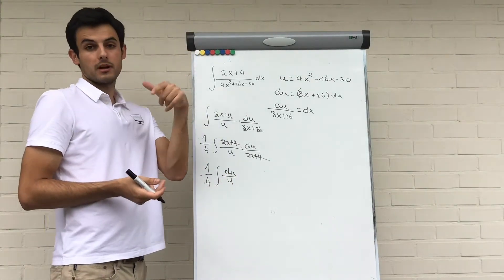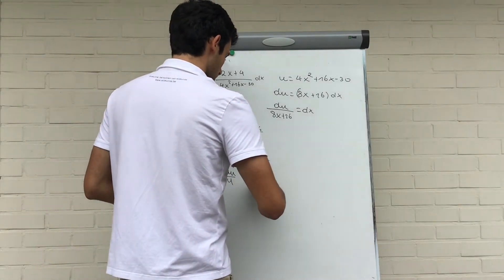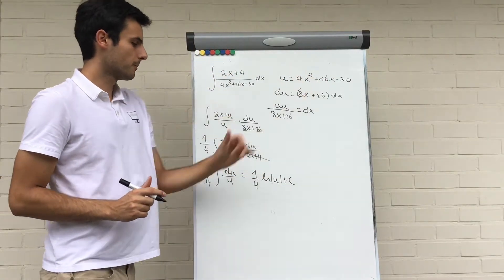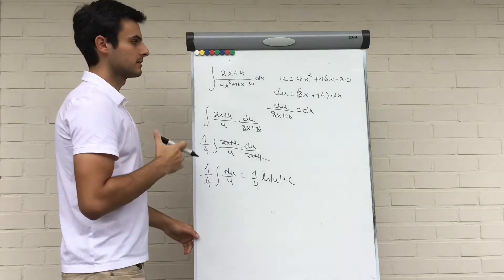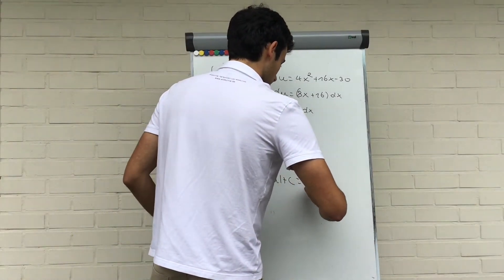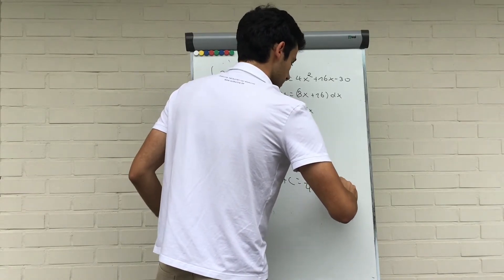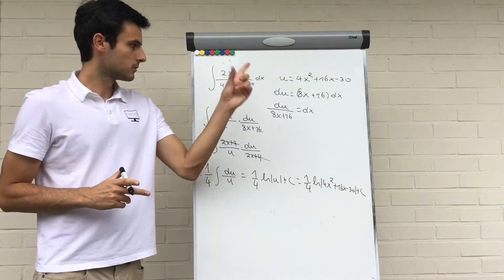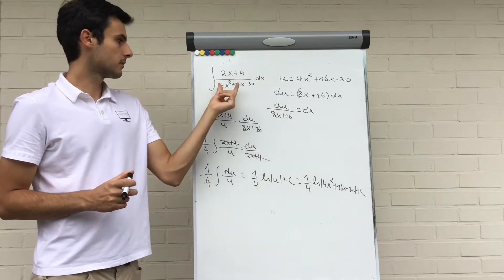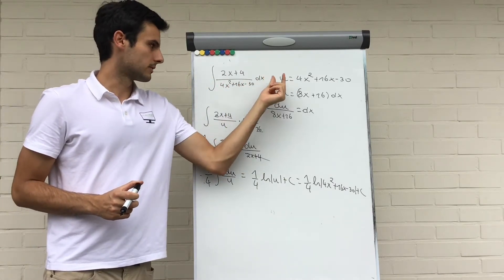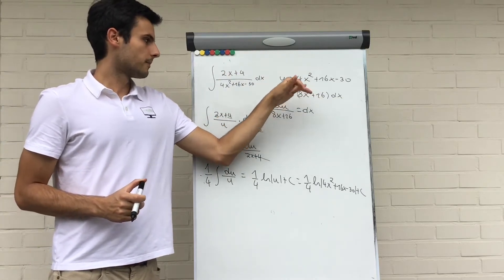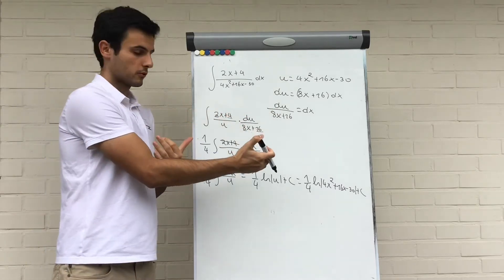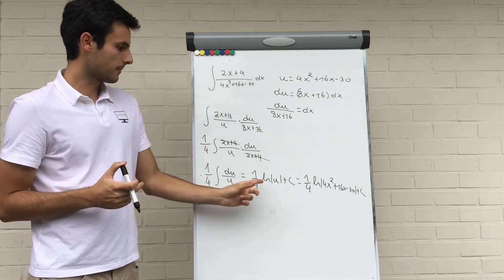We know 1 divided by x integrates to ln, so we get one-fourth times ln of u plus a constant c. Now we replace u by 4x squared plus 16x minus 30, giving us one-fourth times ln of (4x squared plus 16x minus 30) plus c. So the key steps were: take the denominator as u, differentiate it to get 8x plus 16, factor out one-fourth, cancel the numerator, and get the ln.